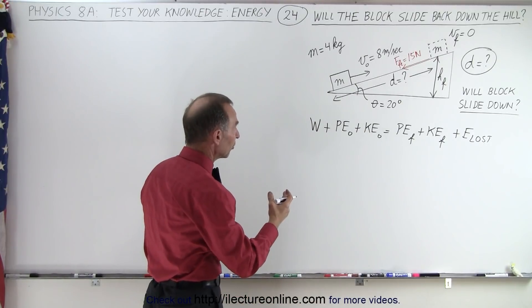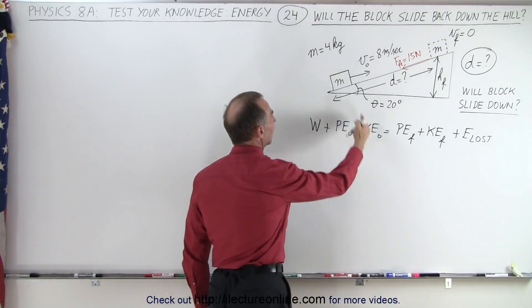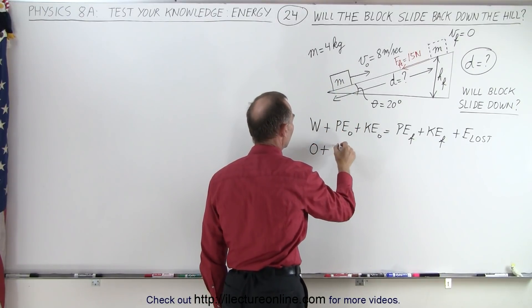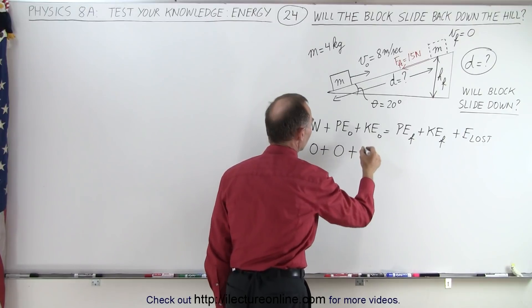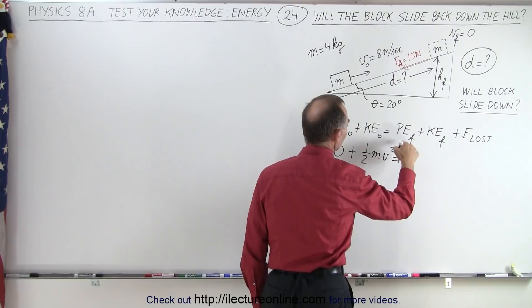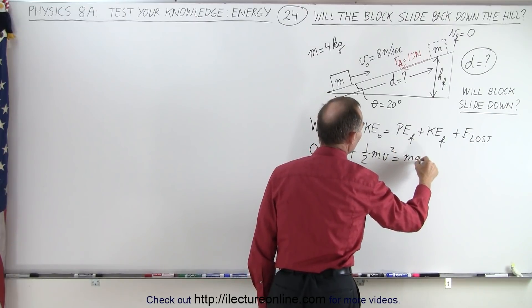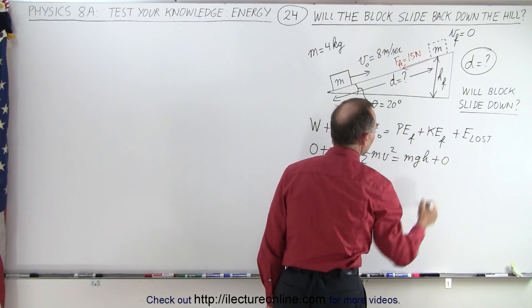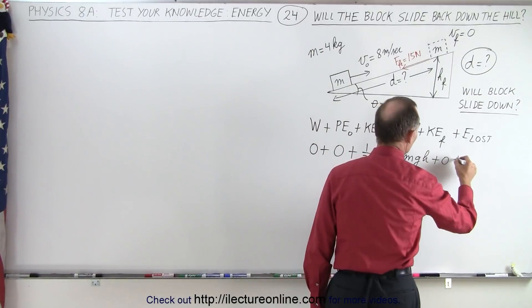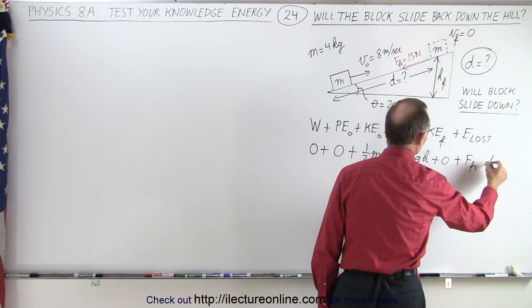There's no work put into the system because we're using the original kinetic energy, so that's zero, plus it starts from zero height. The original kinetic energy will be one-half mv squared. The final potential energy will be mgh. There'll be no kinetic energy at the end because the block is not moving, and the energy lost will be force friction times distance.